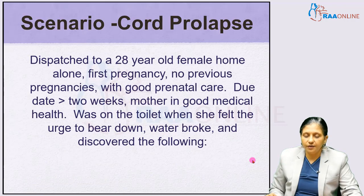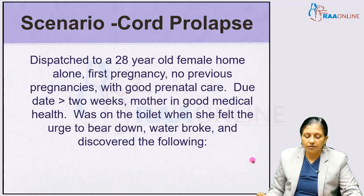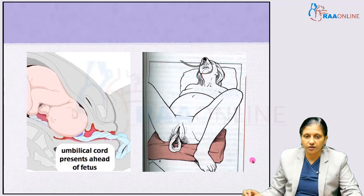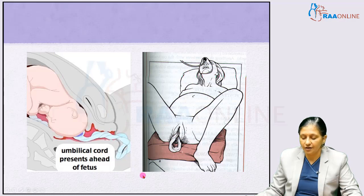Consider this scenario: we were dispatched to a 28-year-old female, home alone, first pregnancy with no previous pregnancies, good prenatal care, due date more than 2 weeks away, and mother was in good medical health. The mother went to the washroom when she felt the urge to bear down, her water broke, and she discovered the umbilical cord coming out — the cord was presenting ahead of the fetus.